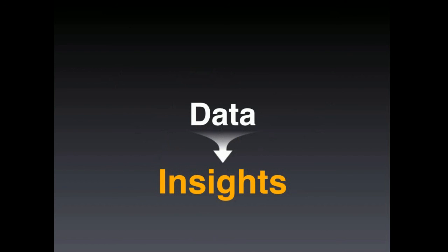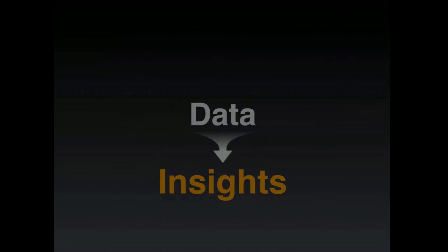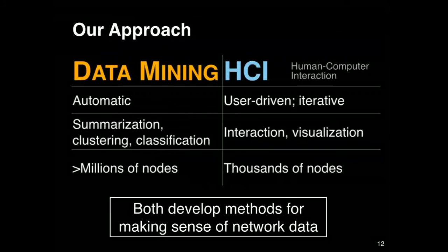Our approach is to combine techniques from data mining and HCI. Both fields have long been developing techniques to help people make sense of large data, but they do it very differently. On the data mining side, they focus on automated techniques like summarization, classification, and clustering — scalable to millions or billions of items. On the HCI side, we care more about user interaction, visualization, and helping with people's tasks and goals — more manual in nature and less scalable. But they're actually very complementary.